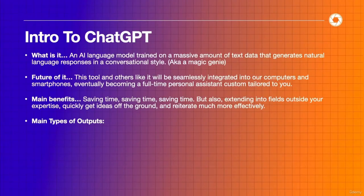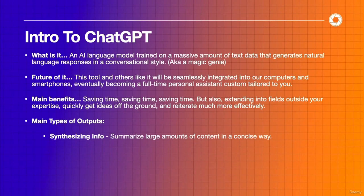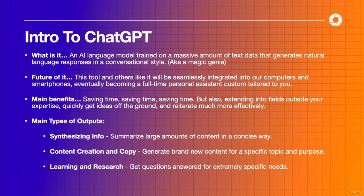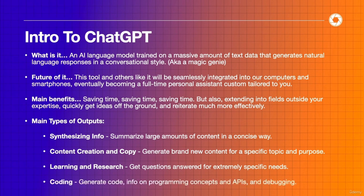The first part of brainstorming and creativity — getting ideas out and remixing them — is very time consuming. With ChatGPT we'll learn to quickly reiterate and create new ideas. Let's talk about the main types of outputs: first, synthesizing info — summarizing massive amounts of content clearly and concisely. Next, content creation and copy — generating brand new content on a specific topic. Then learning and research — getting questions answered super quickly. And lastly, coding — generating code, programming concepts, APIs, and debugging.